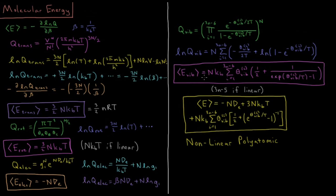Taking the derivative with respect to beta — left as an exercise — the vibrational energy is nk times the sum over all vibrational modes of θ_vib,i · [1/2 + 1/(e^(θ_vib,i/T) − 1)]. There is a zero-point energy contribution of 1/2 · nk · θ_vib,i for each normal mode. The second term doesn't contribute much unless T is greater than θ_vib,i, and since θ_vib is above 300 K for almost every vibrational mode, the zero-point term dominates at room temperature.